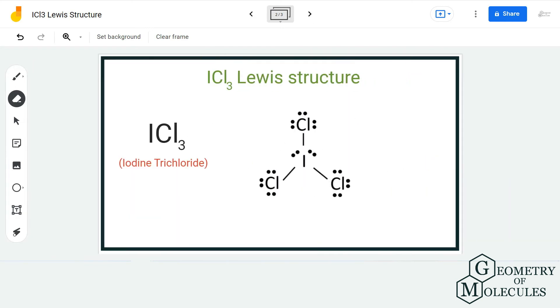You can also check out the formal charges for ensuring that this is a Lewis structure, but the formal charges will be zero, and hence this is the Lewis structure for ICl₃.